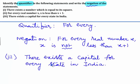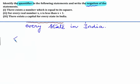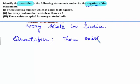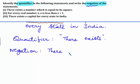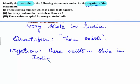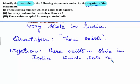The given third statement is: there exists a capital for every state in India. The quantifier is 'there exists.' The negation for this statement is: there exists a state in India which does not have a capital.